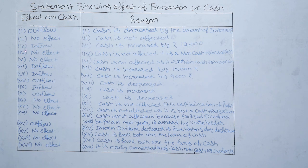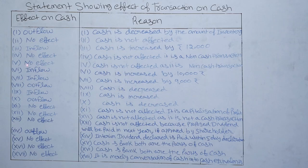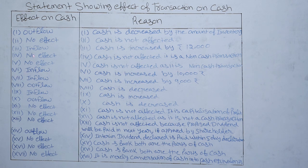For the fourth item — sale of goods on credit — cash does not come into the business, so we do not consider this item in the cash flow statement. Effect: no effect. Reason: cash is not affected as it is a non-cash transaction. For the fifth item — purchase of fixed assets by issue of shares — we have not paid cash but issued shares, so there is no outflow of cash. Reason: cash is not affected as it is a non-cash transaction.